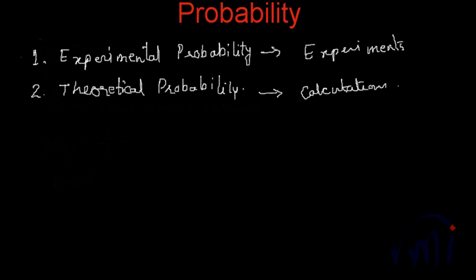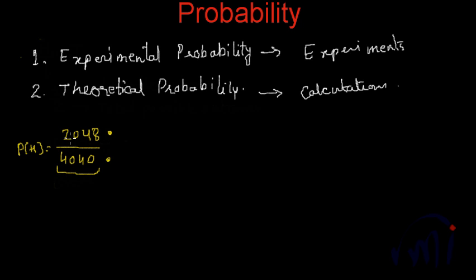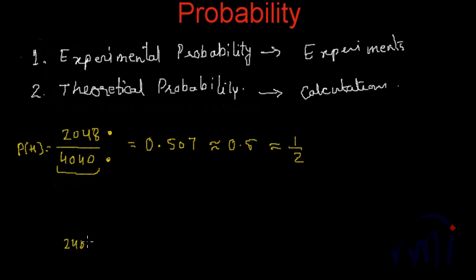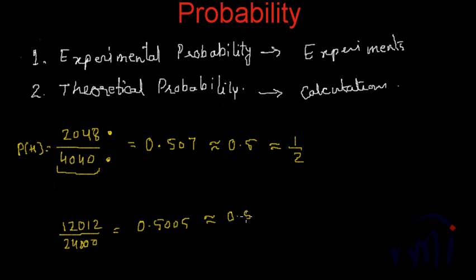When a French scientist tossed a coin 4040 times, he got heads for 2048 times. So the probability of getting heads is equal to the favorable outcomes of the experiment divided by the total number of times the experiment is done. The experiment was done 4040 times and 2048 times he got heads. So the probability he got through experiment was 0.507, which is approximately equal to 0.5, that means approximately equal to 1 by 2. When another scientist tossed this coin for 24,000 times, he got heads for 12,012 times, which is actually equal to 0.505, very closely equal to 0.5, which is equal to 1 by 2.